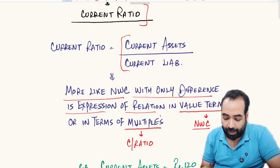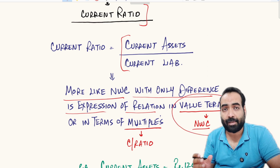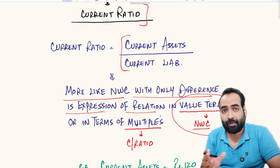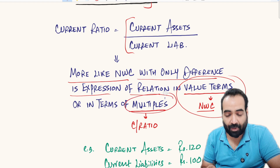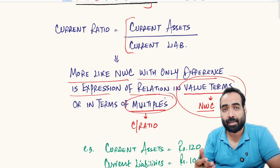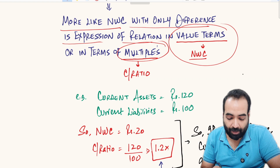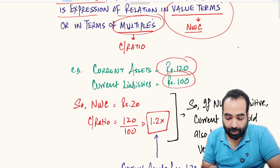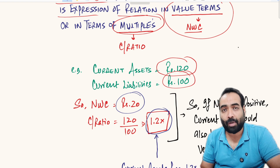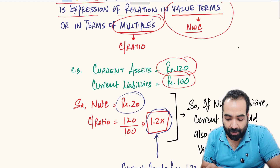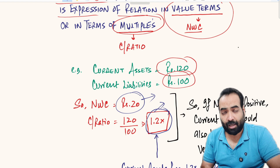In NWC we explained the relation in value terms — the difference between current assets and current liabilities is expressed as a value. But in current ratio we are expressing the same relationship in terms of a multiple: how many times the current assets are of current liabilities. For example, if current assets are ₹120 and current liabilities are ₹100, the NWC would be ₹20 and the current ratio will be 1.2x.